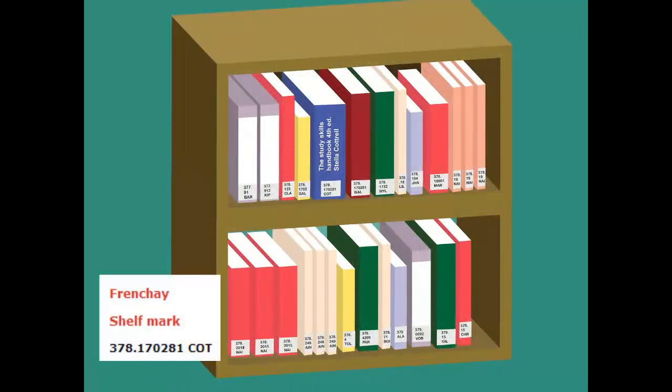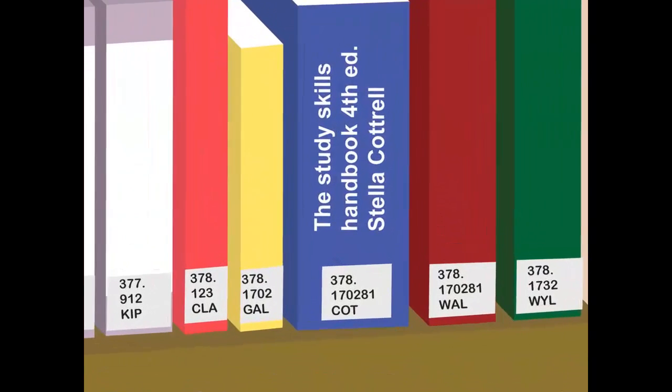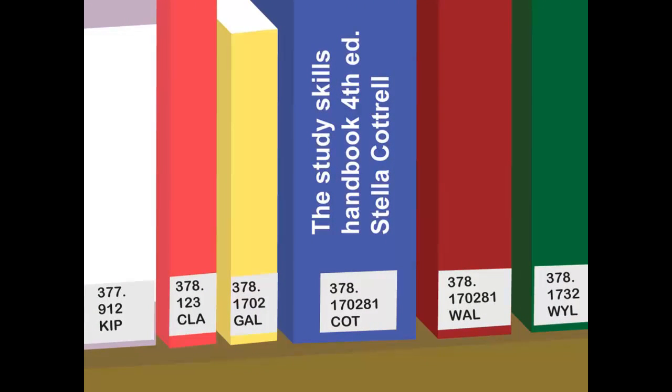Once you have found the right number, look along the shelf for the right letters. These refer to the first three letters from the author's surname. The book we are looking for is here.